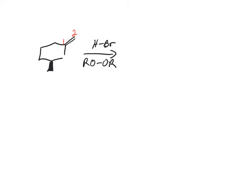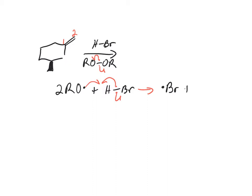This is going to be a radical reaction, so it's going to be a little different. The first step is the initiator breaking up. The peroxide breaks, and it reacts first with HBr — another pretty reactive bond. That's going to make Br dot, plus ROH, plus there's still another RO dot floating around.